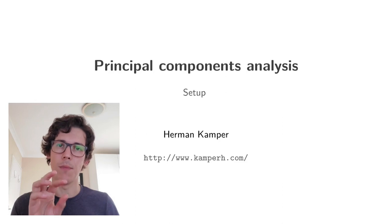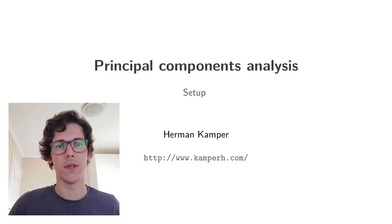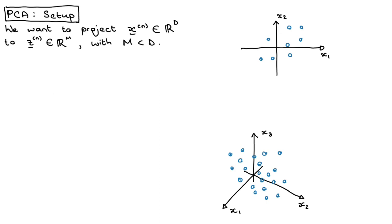We'll also briefly look at how we can actually go back from the lower dimensional space back into the higher dimensional space. Our goal is that we have a data set in a high dimensional space, maybe with dimensionality capital D. What we want to do is project data points in this high dimensional space to data points in a lower dimensional space. We'll call those data points Z, with dimensionality M, where capital M is smaller than capital D.